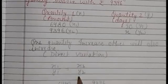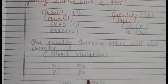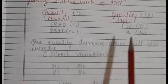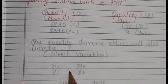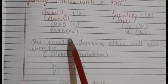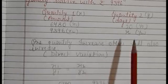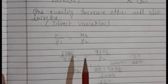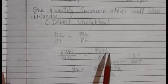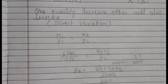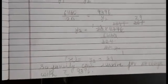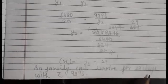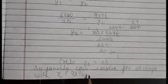For direct variation the formula is x₁/y₁ = x₂/y₂. Putting the values: 6480/20 = 9396/x. After cross multiplication and solving, the answer is 29. So the family can survive for 29 days with Rs. 9,396.